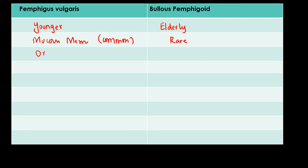Oral lesions are common in approximately 70 to 80% of patients with Pemphigus Vulgaris, whereas in patients with Bullous Pemphigoid, oral lesion involvement is just 30%.